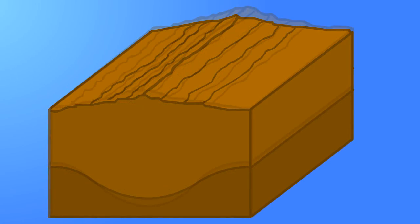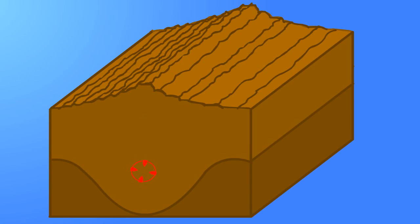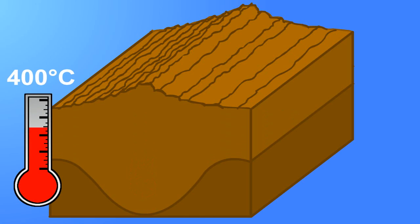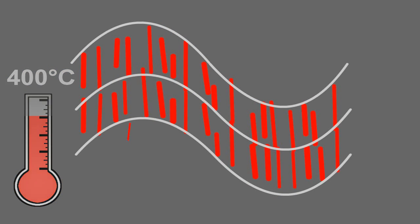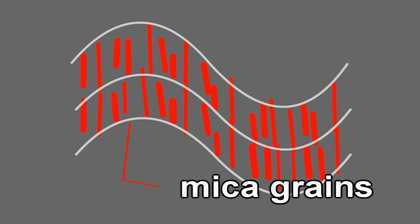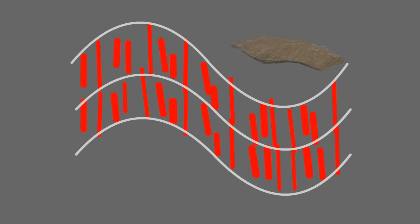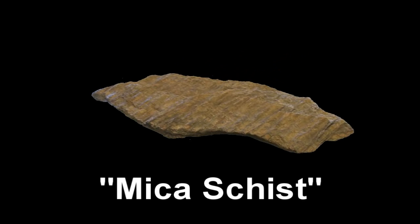This deformation caused the slate to be buried somewhat deeper, where the temperature was even greater. This in turn caused the mica grains to grow even larger in size, forming the sparkly silver-colored muscovite we see today, and transforming the rock from a slate into a mica schist.